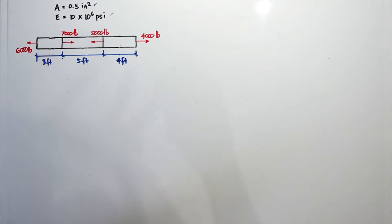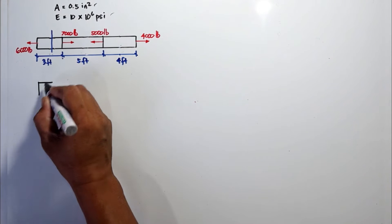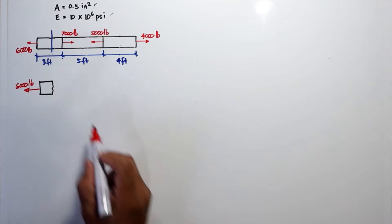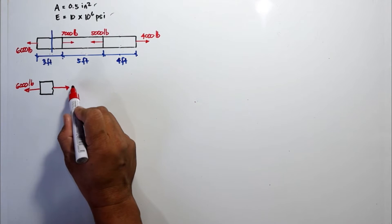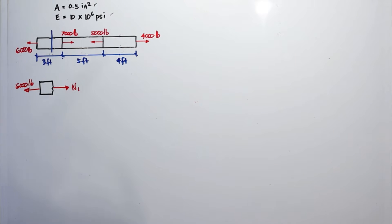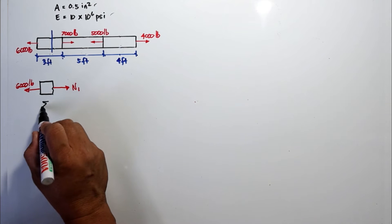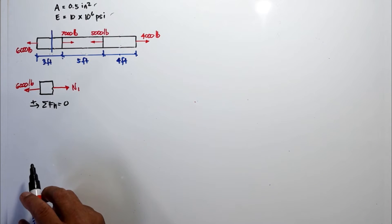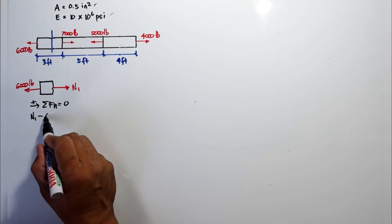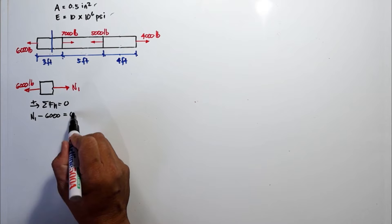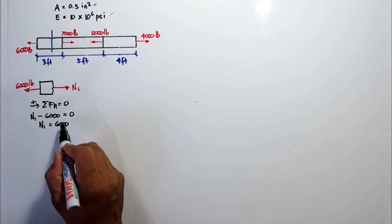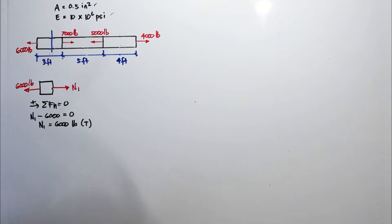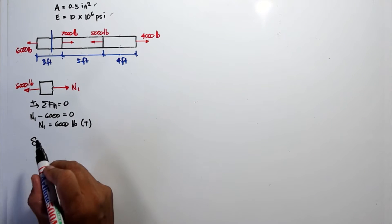We cut the first section and draw the free body diagram. The external load is six thousand pounds to the left, so the internal force N sub 1 should be to the right, meaning it is in tension. Summing forces horizontally and taking rightward as positive: N sub 1 minus six thousand equals zero, so N sub 1 is six thousand pounds in tension.